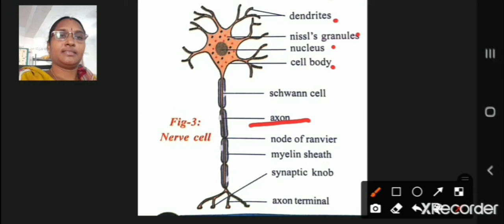The axon is surrounded by a specialized insulatory sheath called myelin sheath. This sheath is interrupted at regular intervals called nodes of ranvier.